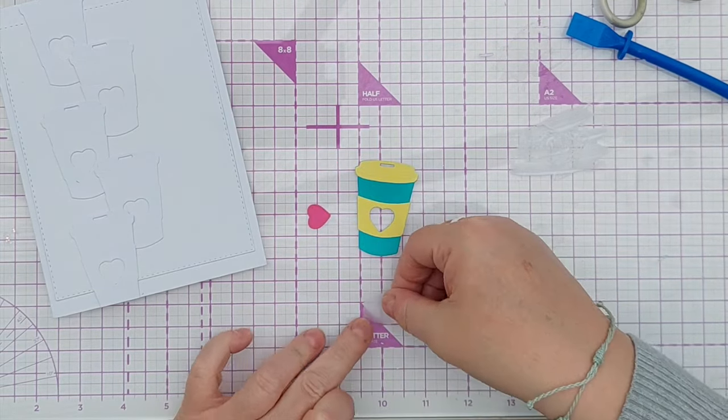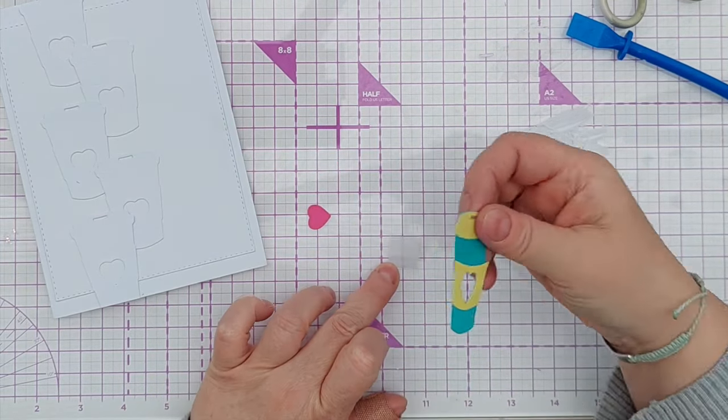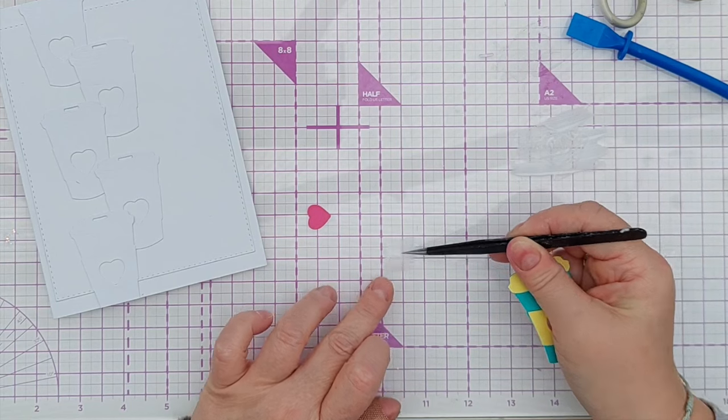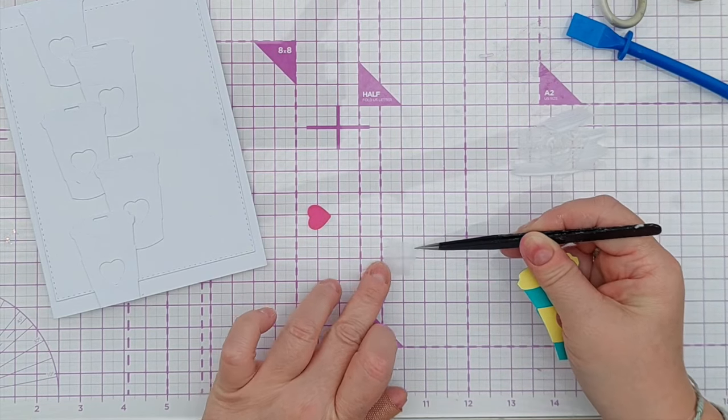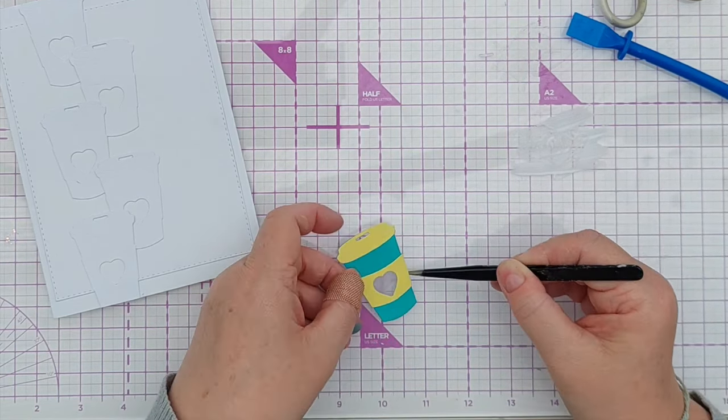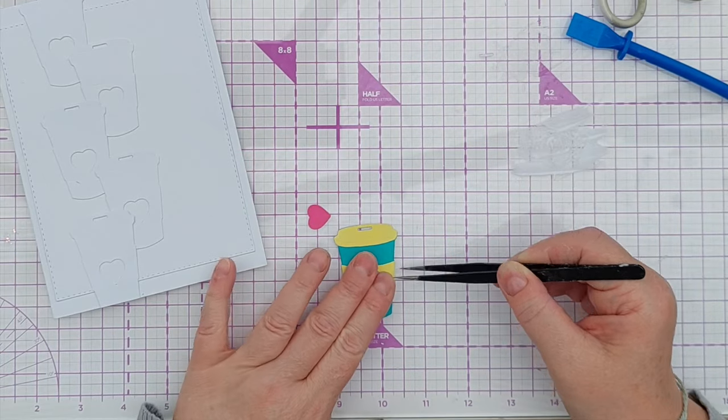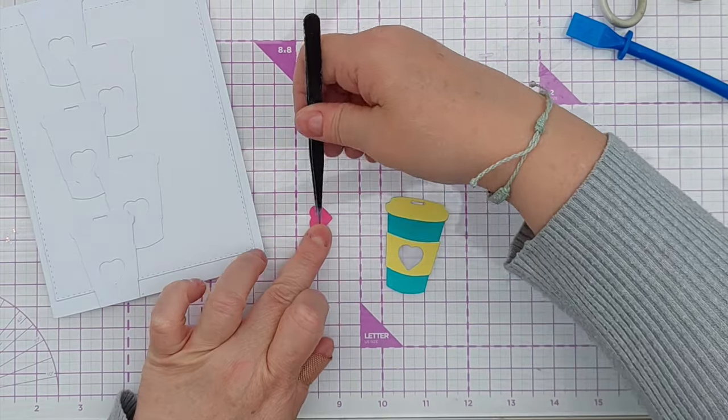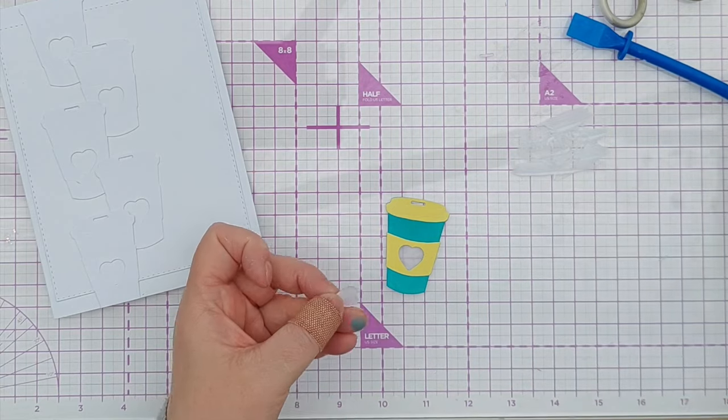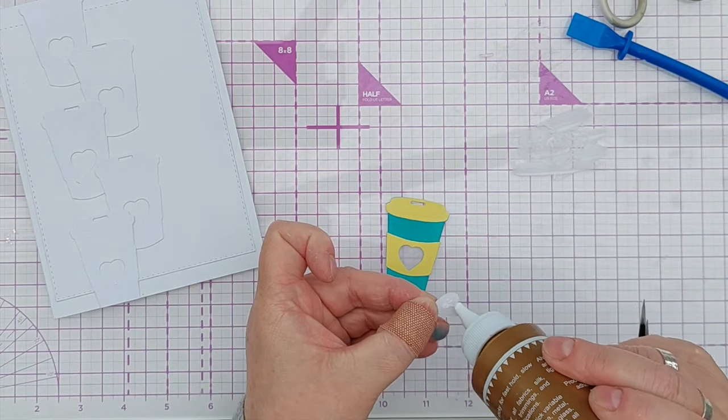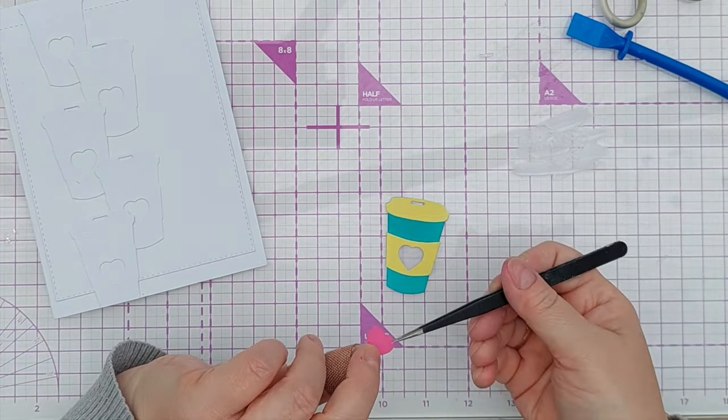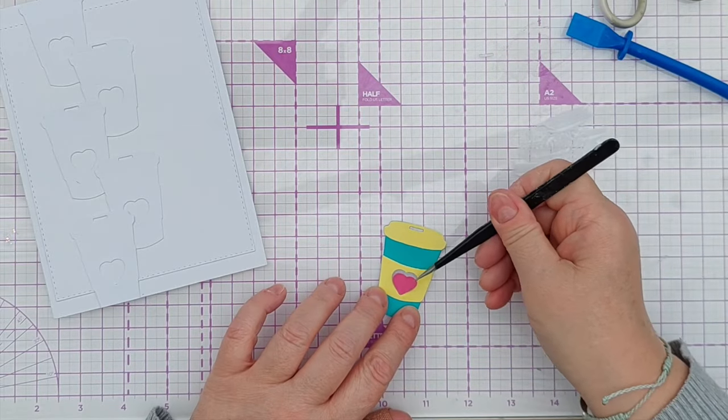To secure the heart I've got a bit of regular sticky tape. I'm going to pop that behind the aperture there, sticky side up. I might add a tiny little bit of glue just for extra security and now I can pop that in.